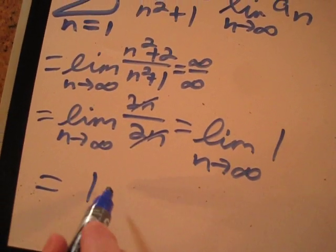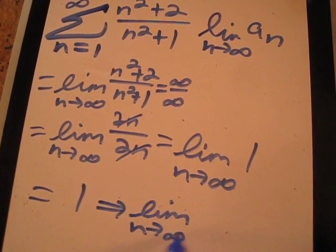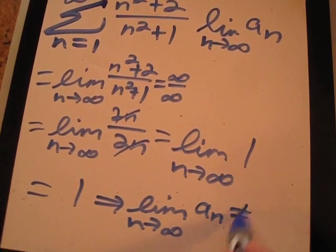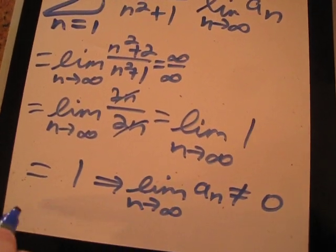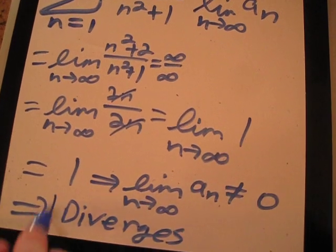Now since this limit is not equal to 0, in other words the limit as n approaches infinity of a sub n is not equal to 0, this tells us that the infinite series diverges.